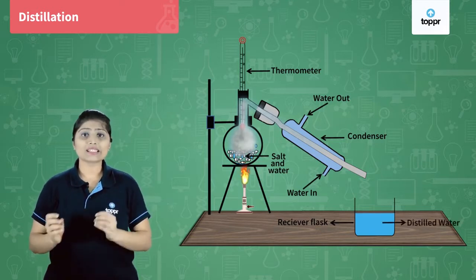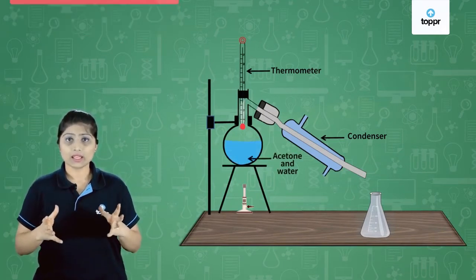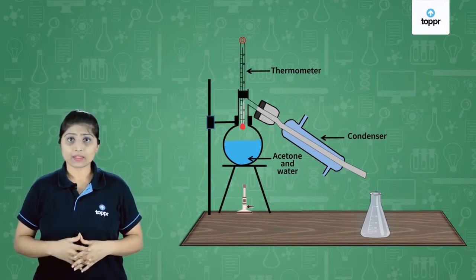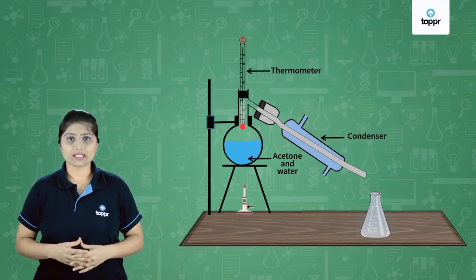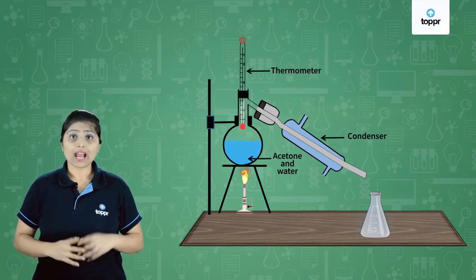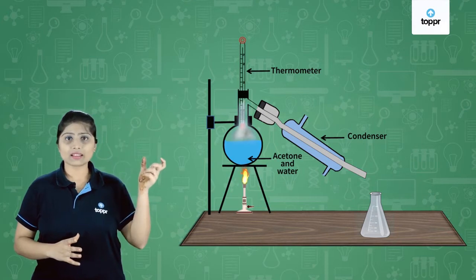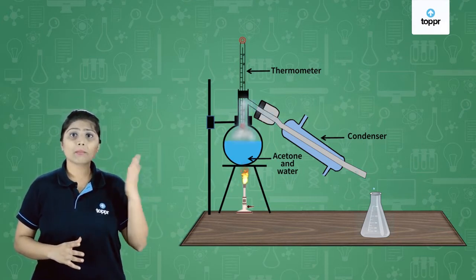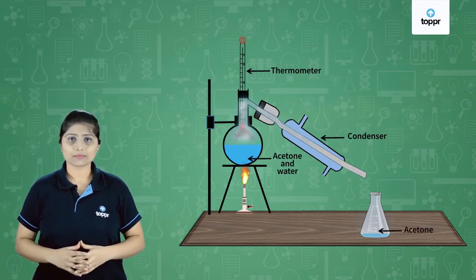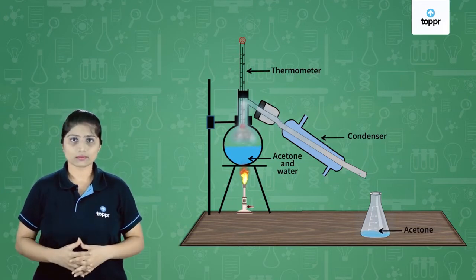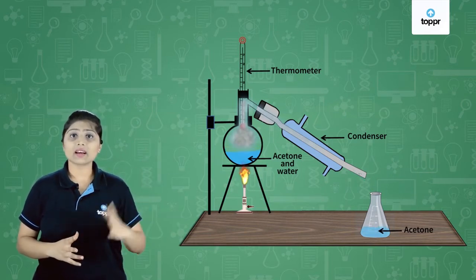This water that is obtained is called distilled water. Now suppose if we have a mixture of acetone and water — both are liquids. We take the mixture in the distillation flask. Acetone evaporates at about 56 degrees Celsius and water evaporates at 100 degrees Celsius. So when we heat the mixture at 56 degrees Celsius, acetone starts evaporating. These acetone vapors are collected in the condenser, cool down, and come back to the liquid state. All the acetone is collected in an appropriate vessel, and what is left behind in the flask is water. At 100 degrees Celsius, the water then starts evaporating and is collected in another vessel.